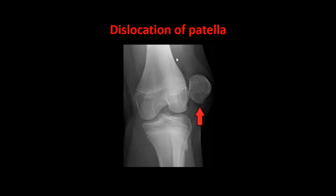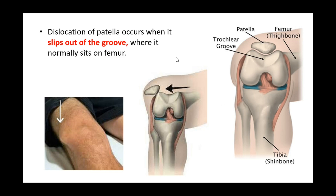Dislocation of patella, or kneecap, occurs when the patella slips out of the groove where it normally sits on the femur. Looking at the anatomy, we have the knee joint and the patellofemoral joint — this is the groove where the patella sits on the femur. In dislocation, the patella slips out of this groove and clinically appears on the lateral side instead of the center.